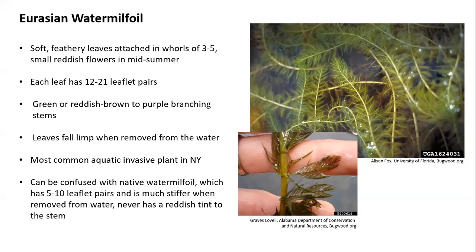This plant can sometimes be confused with native water milfoil. One of the best ways to tell them apart is that native milfoil only has five to ten of those little leaflets instead of the 12 to 20. Native milfoil is also much stiffer when removed from the water and less likely to drop its branches down to the stem. The Eurasian water milfoil will sometimes get a reddish tint to the stem, whereas the native milfoil stem is green.